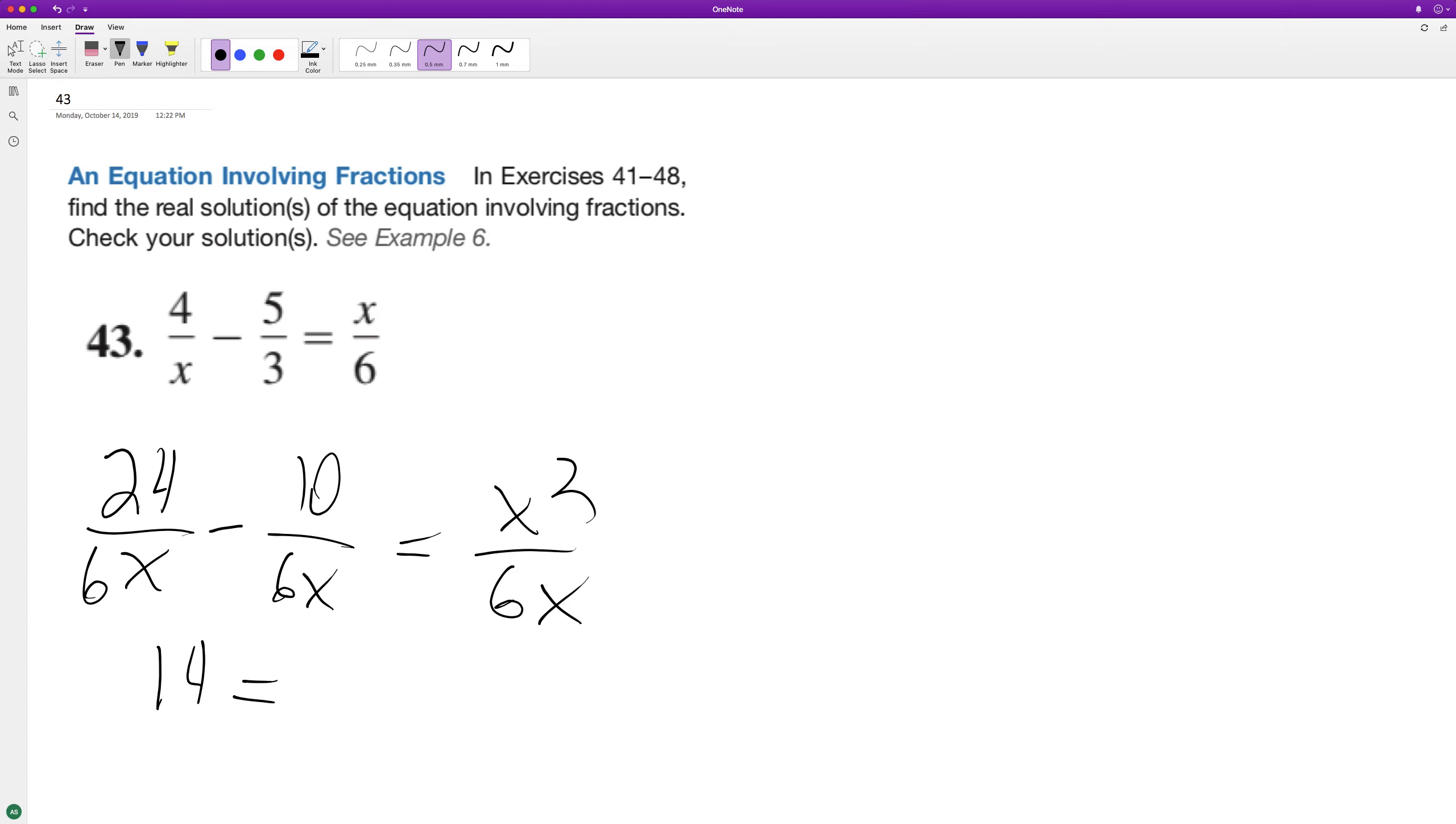This should be 24 minus 10x is equal to x squared. Since they all have the same common denominator we can just drop them. Getting everything on one side, we'll end up with x squared plus 10x minus 24 is equal to zero.